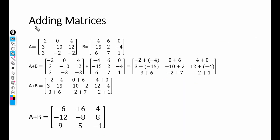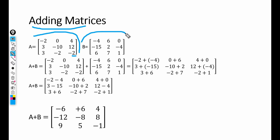Now we are going to explain how to add matrices. We have two matrices: Matrix A is minus 2, 0, 4, 3, minus 10, 12, 3, minus 2, and minus 2. Matrix B is minus 4, 6, 0, and 6, 7, 1. For adding these two matrices, we must first confirm their dimensions.